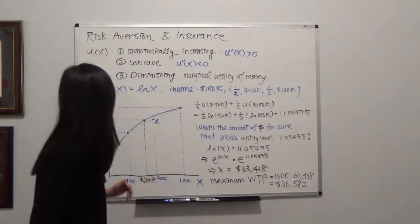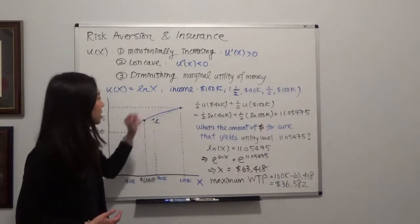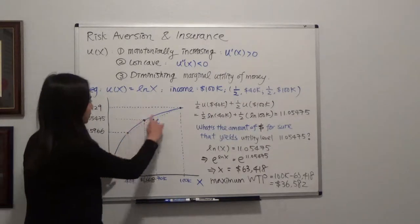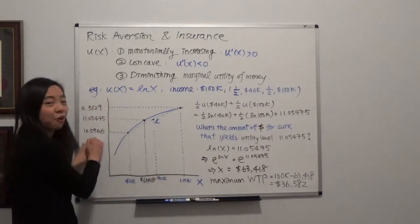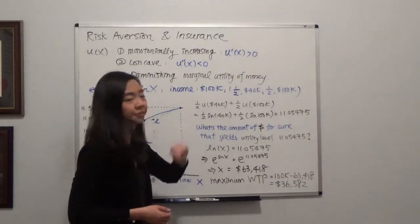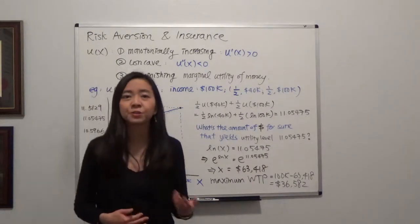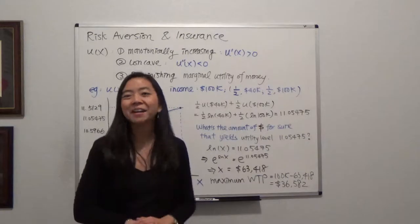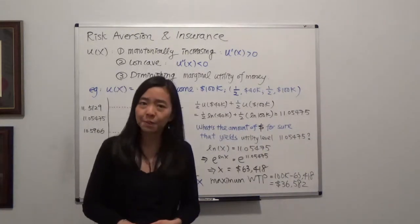Now, suppose your utility function u(x) is equal to the natural log of x. So you can see this is our utility function, that's our wealth, and that's our utility of wealth. And suppose you have a hundred thousand dollars income per year, and you also have a friend who's a medical doctor who kindly gave you a free medical checkup. But she also brought you some bad news.